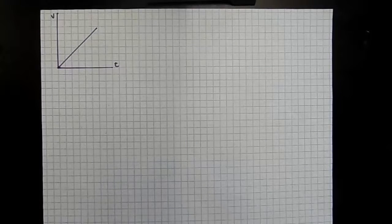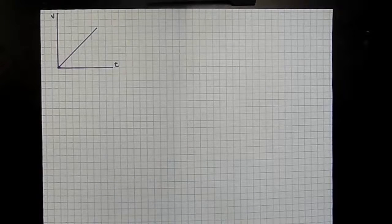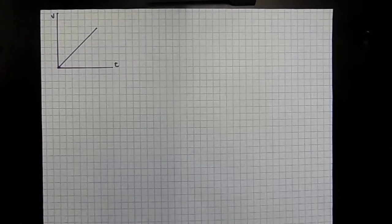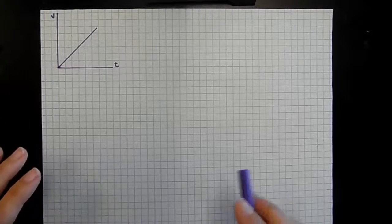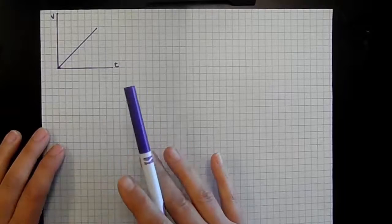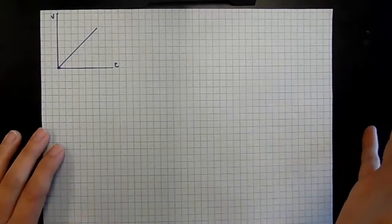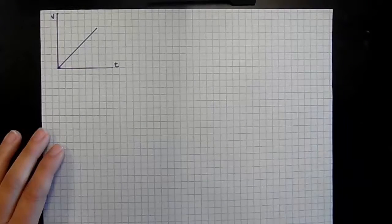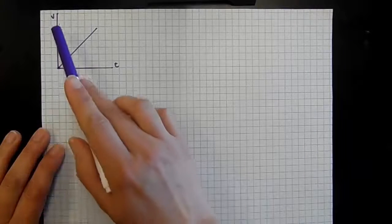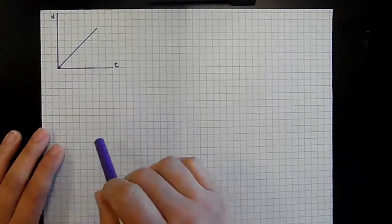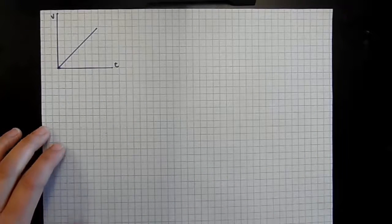Here we have our velocity-time graph, and what we want to accomplish today is figure out some equations. We want to mathematically express the relationship between velocity, time, position, initial position, and acceleration — all those things. We want to come up with some expressions that will help us relate those variables.